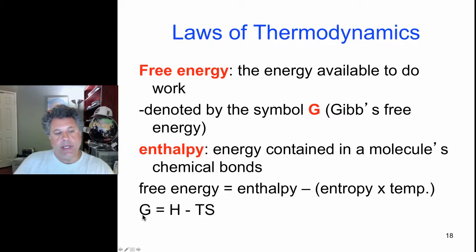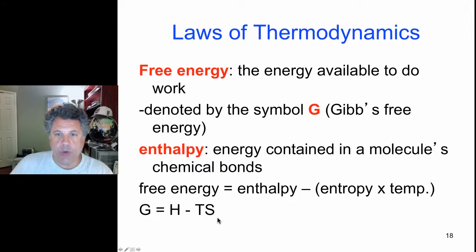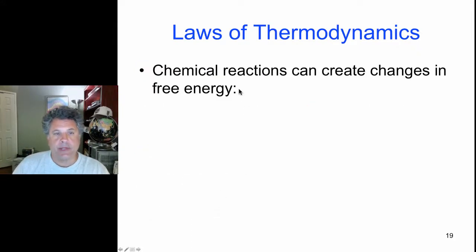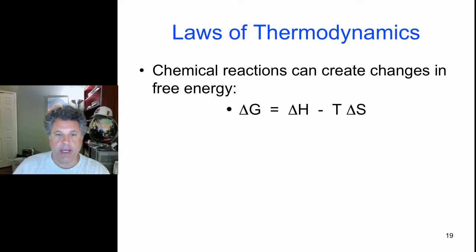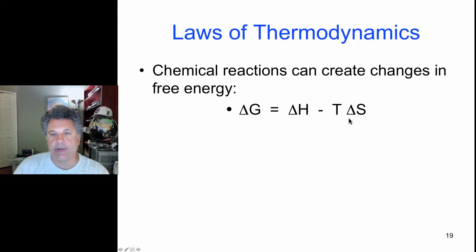We are considering free energy and how it changes when reactions take place. Chemical reactions or biochemical reactions can create changes in free energy, and we use delta as the change symbol. The change in free energy equals the change in enthalpy minus temperature times delta S, the change in entropy.